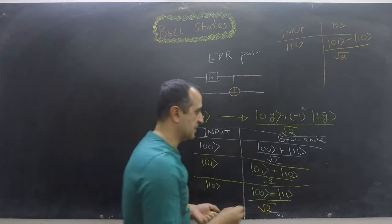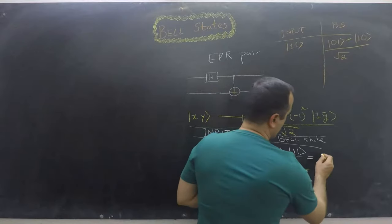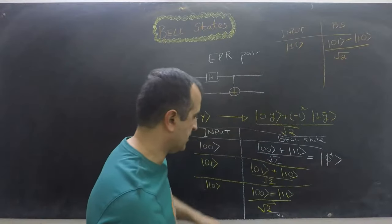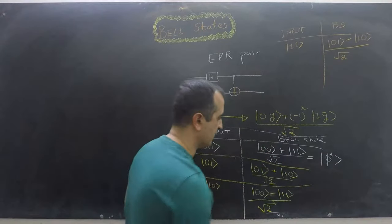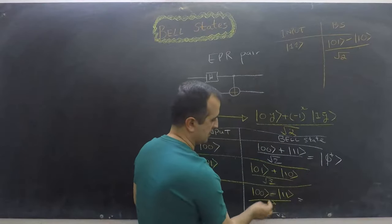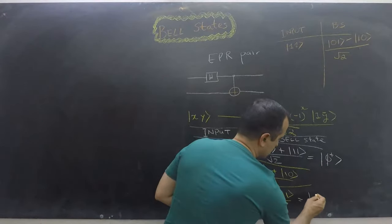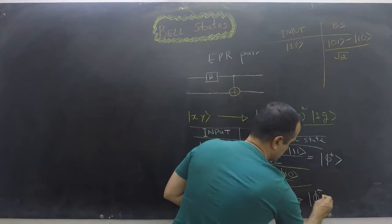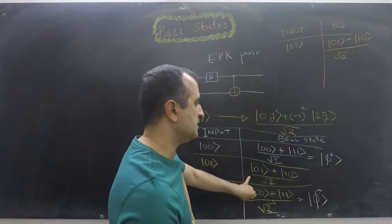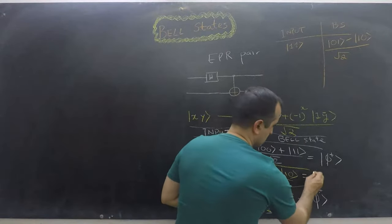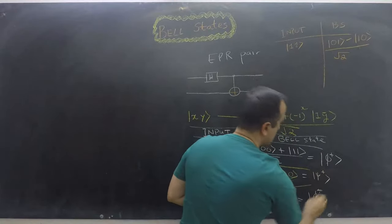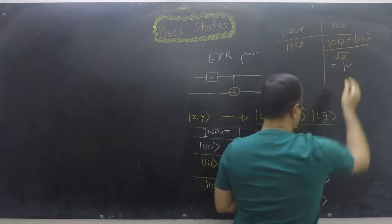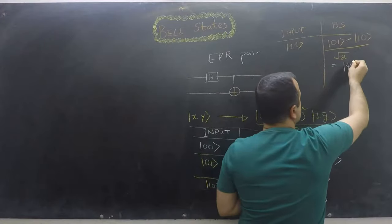We usually refer to the first Bell state as φ+ (phi plus), and the second as φ− (phi minus), because these two are the same but the sign is different. We refer to the third as ψ+ (psi plus), and obviously the fourth as ψ− (psi minus), because these two are the same but they have a different sign or different phase.